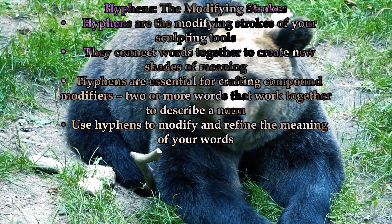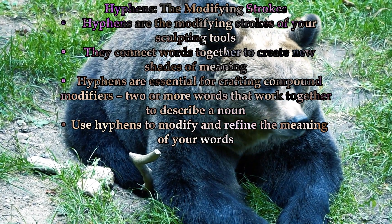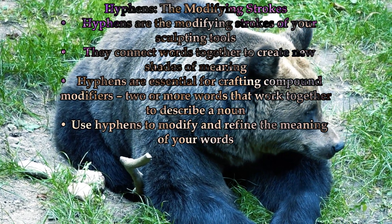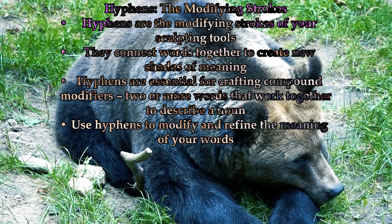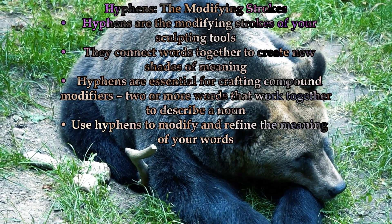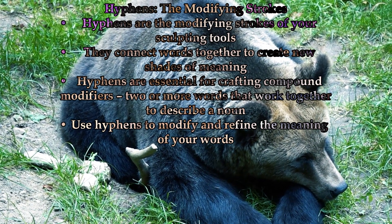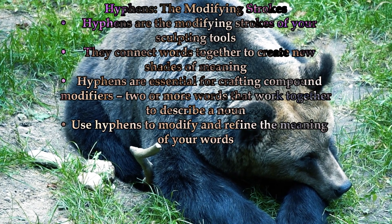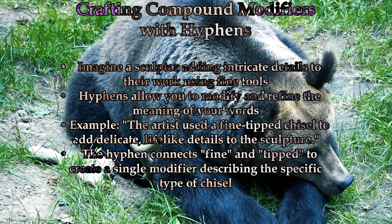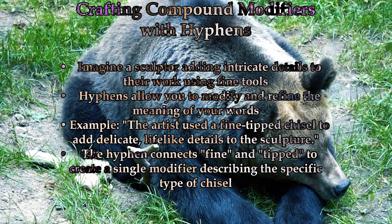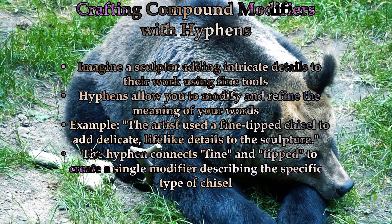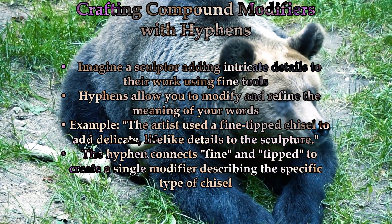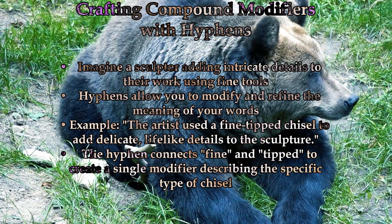Part 3: Hyphens — The Modifying Strokes. Hyphens are the modifying strokes of your sculpting tools, connecting words together to create new shades of meaning. These small but mighty marks are essential for crafting compound modifiers — two or more words that work together to describe a noun. Imagine a sculptor adding intricate details to their work, using fine tools to modify the surface and create new textures. In the same way, hyphens allow you to modify and refine the meaning of your words.